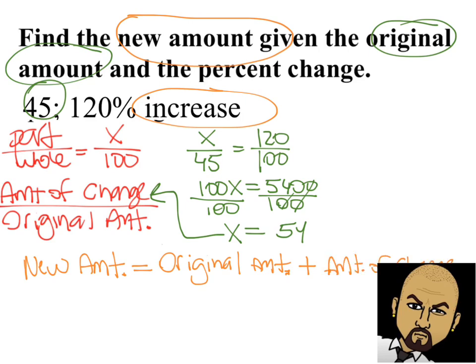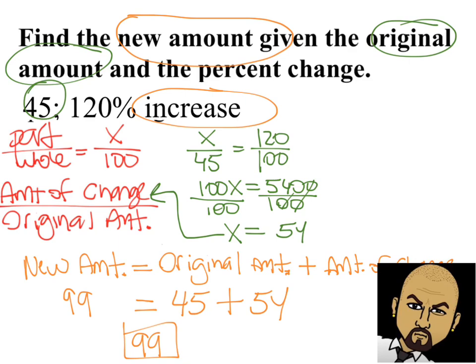We're going to add 45, which was our original amount, and 54, which was the amount of change — because it's increasing. The new amount is 99. So our final answer is 99 for the new amount.